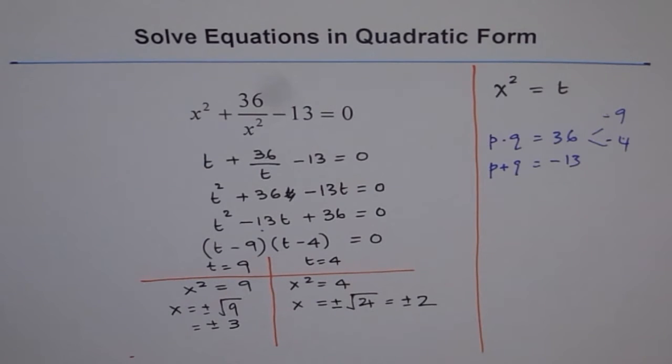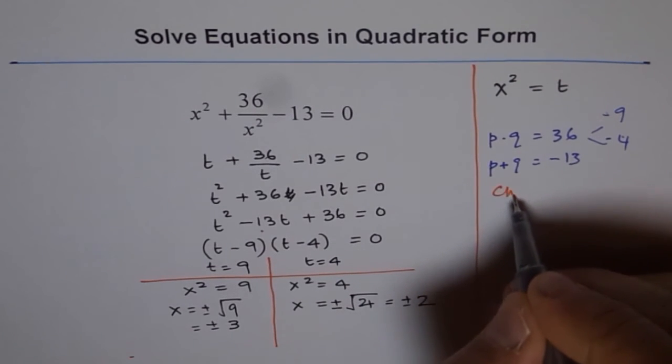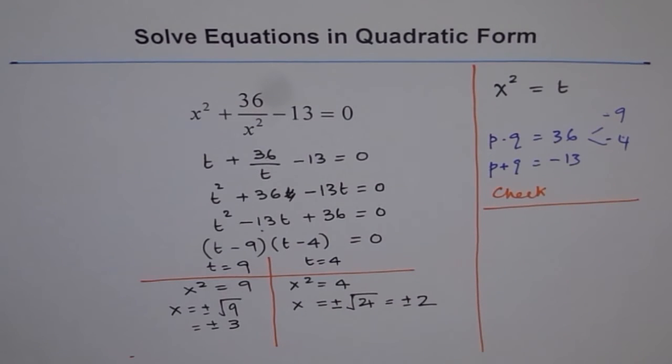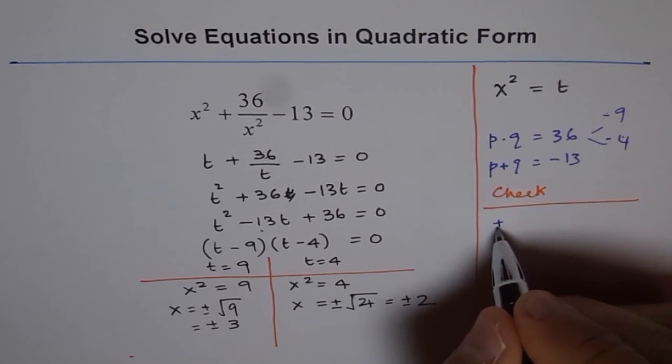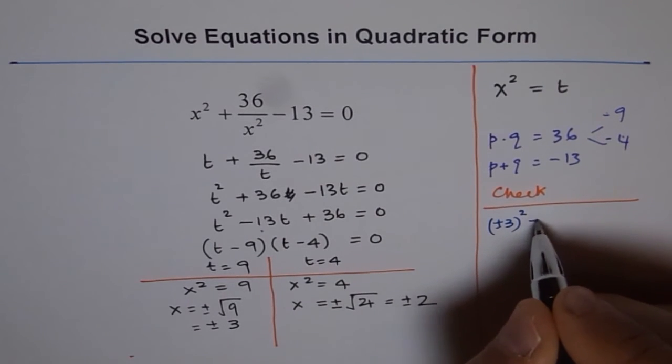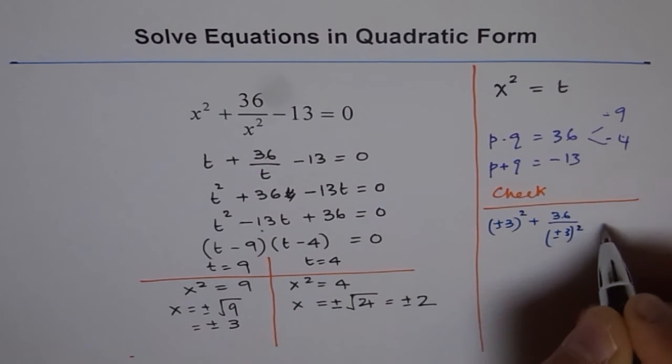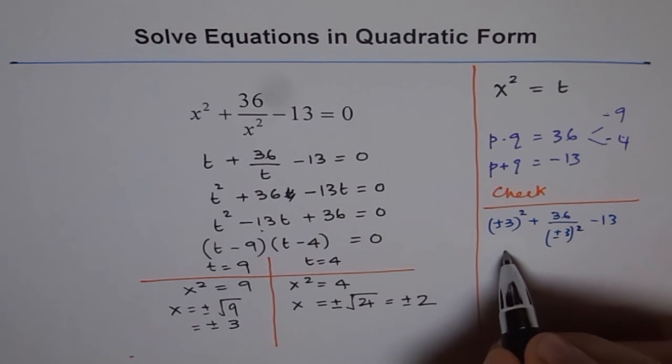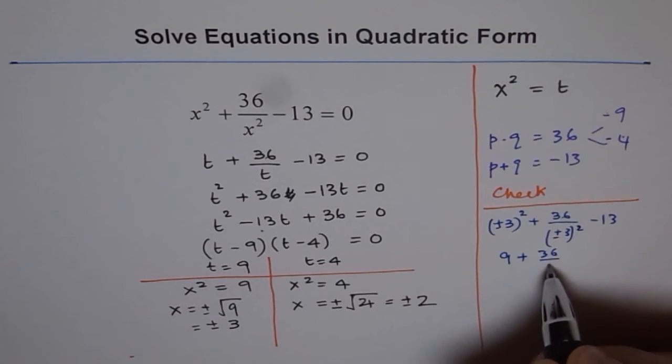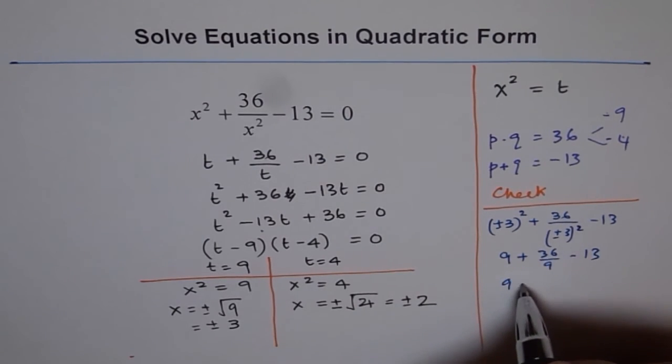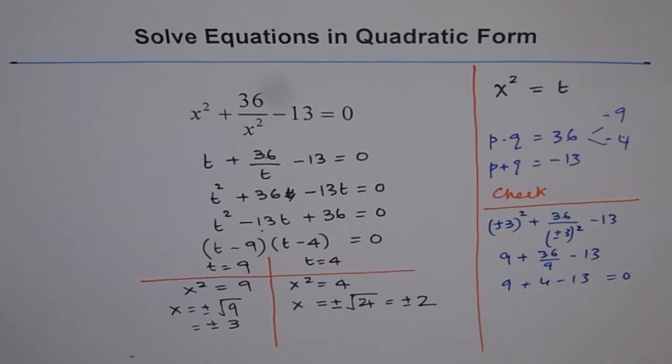Now, so you get two different answers. At this stage, it is a good idea to check if you really got the right answers or not. So, let's do that check. We will do check. So, we can check it here and say, well, let's put plus and minus 3. Since square will be positive, we can put plus and minus 3 together. So, we write plus and minus 3 squared plus 36 over plus and minus 3 squared minus 13 is what? Plus and minus 3 squared is 9. So, 9 plus 36 over 9 minus 13. 9 plus 4 minus 13. Oh, that is 0, so it works.